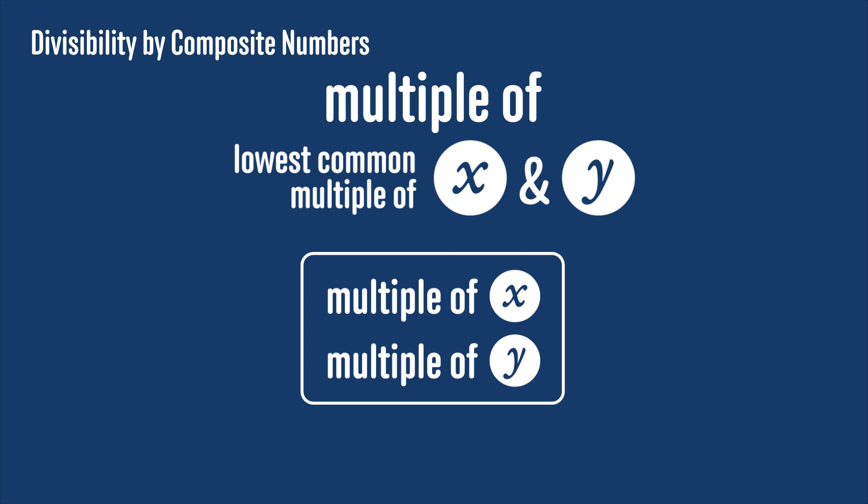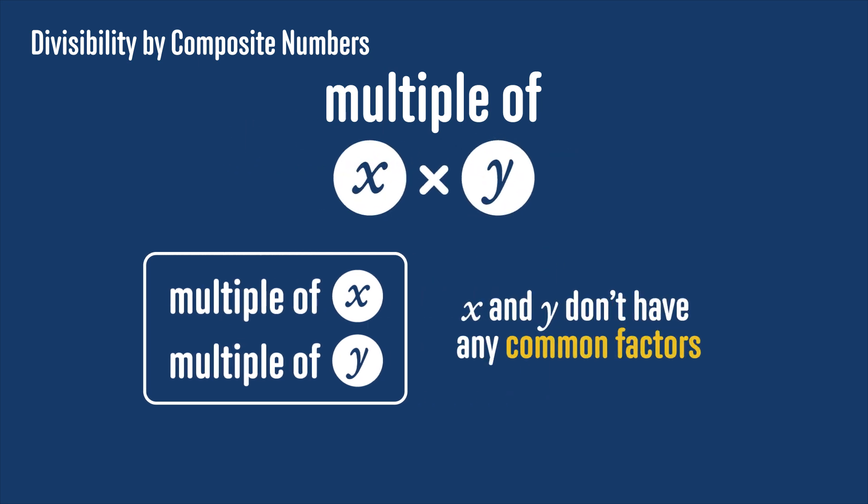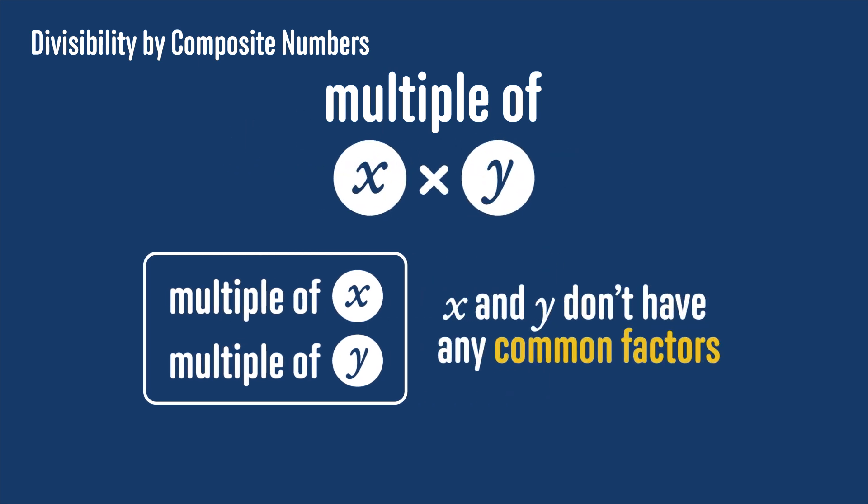That's a bit more than we need to do for these math challenges at this level, so what I want you to take away from this for now is that when you have two numbers that don't have any factors in common, then you can say that any number that's a multiple of both of them will be a multiple of their product. But this is only true when the numbers don't have any factors in common.